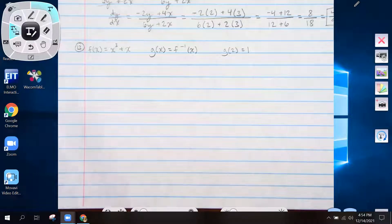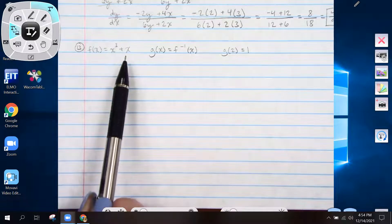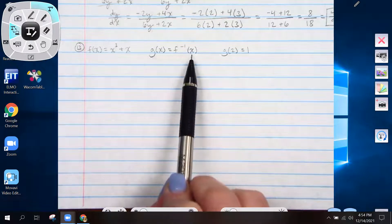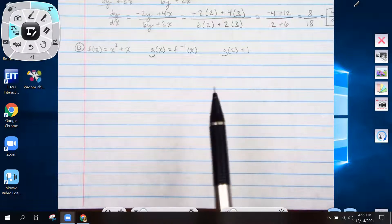Number 13. Let f be the function defined by f of x equals x cubed plus x. If g of x equals f inverse of x and g of 2 equals 1, what is the value of g prime of 2?